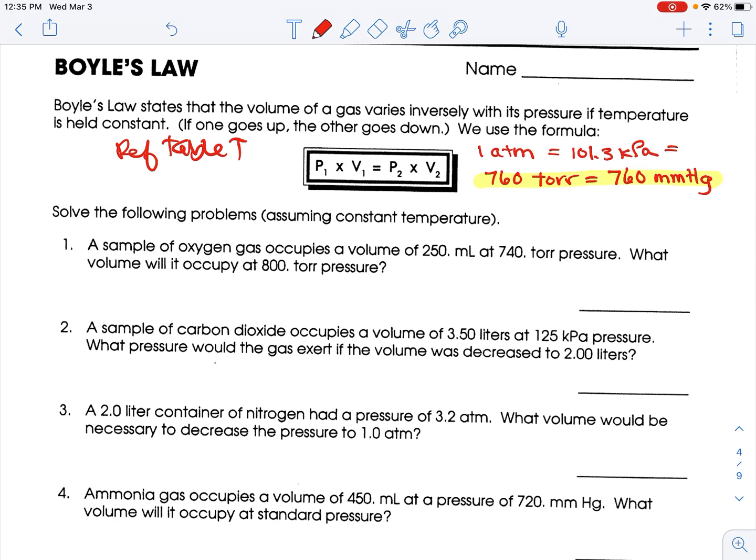Assuming constant temperature, so we don't need to worry about that. A sample of oxygen gas occupies a volume of 250 milliliters at 740 torr pressure. What volume will it occupy at 800 torr pressure? So, P1 is 740, V1 is 250, P2 is 800, and we don't know V2.